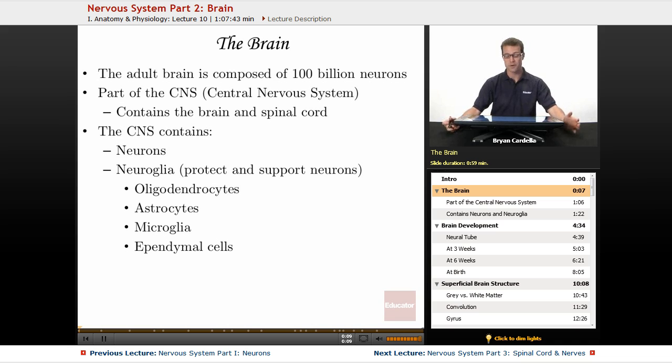The adult brain is composed of a hundred billion neurons, which is amazing to think about. That's a lot of cells.